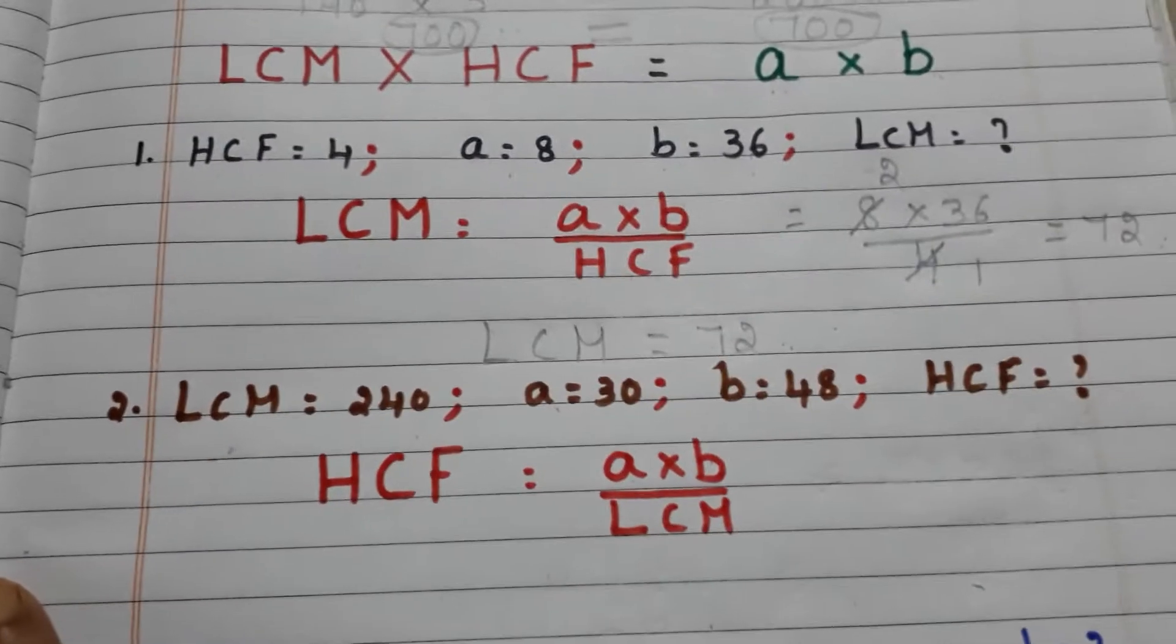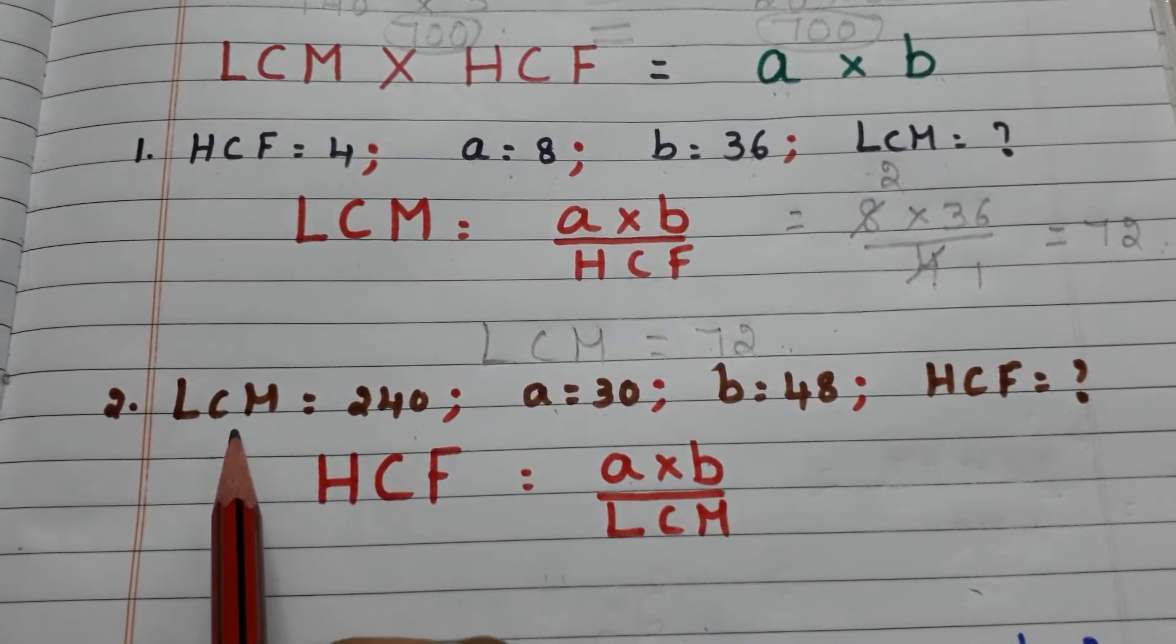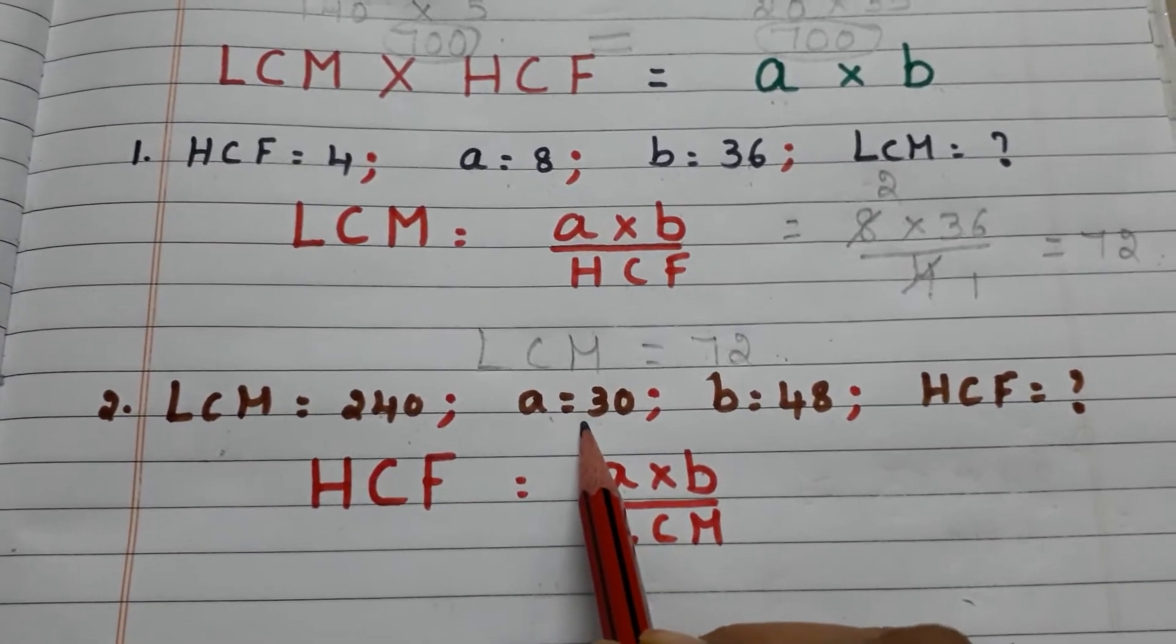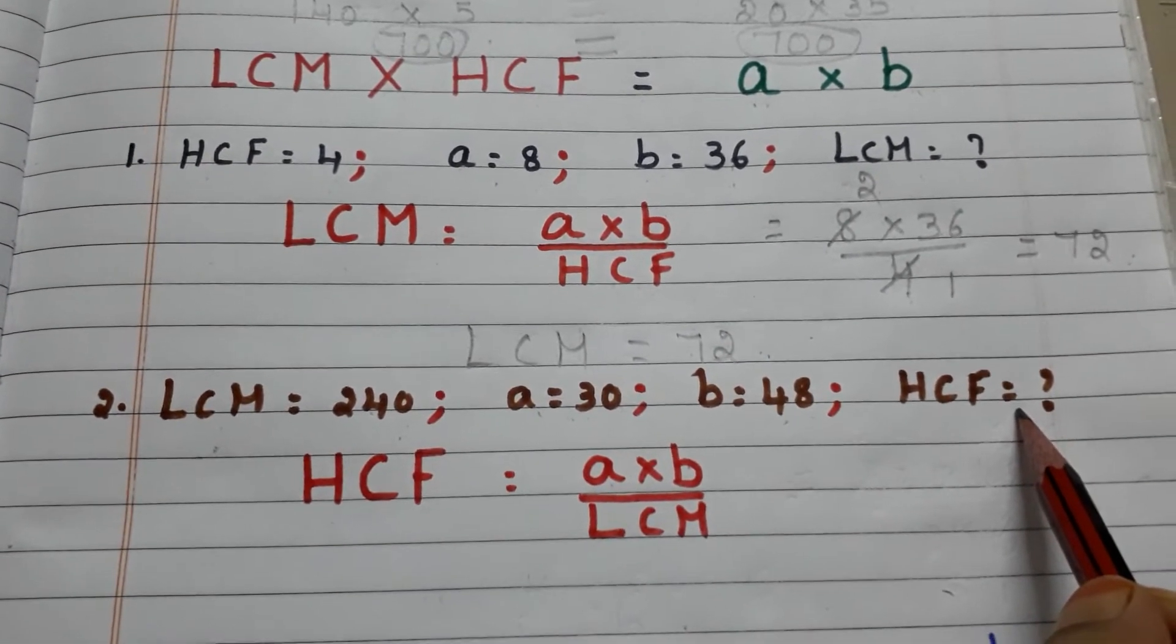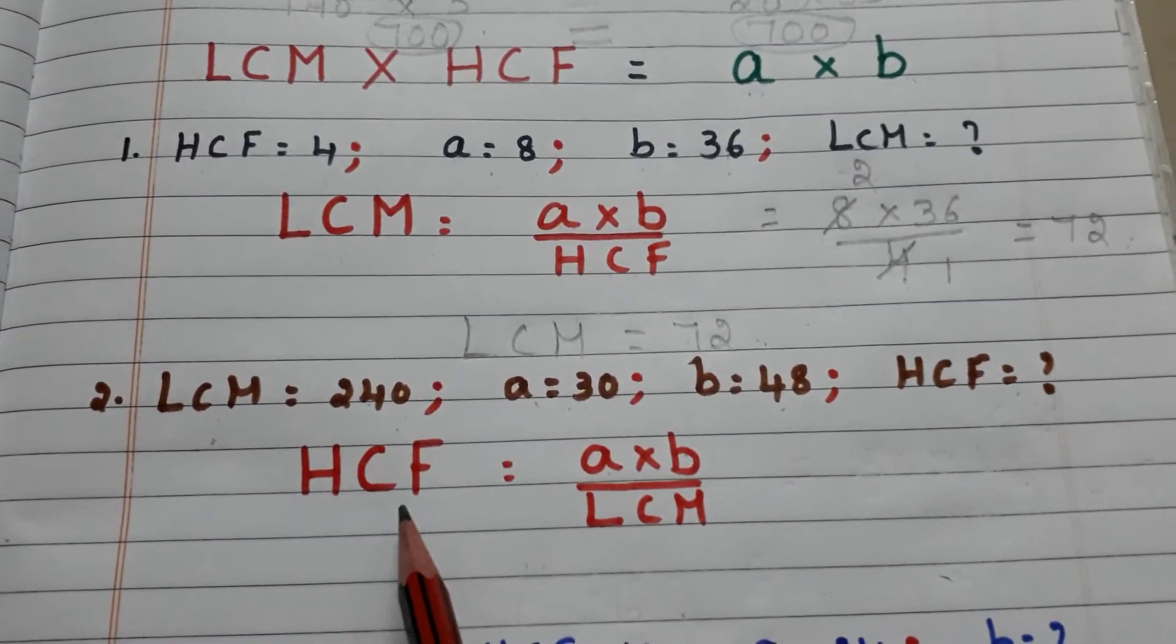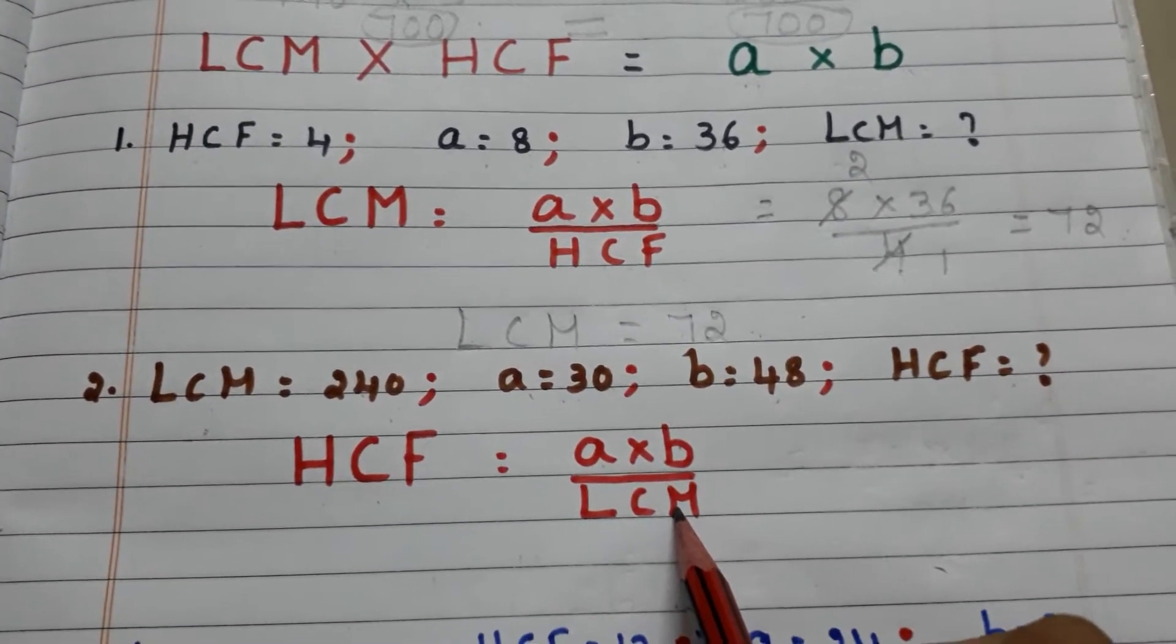Let us go to case 2. Here we have LCM equals 240, first number equals 30, second number equals 48, and we have to find HCF. Now the formula becomes HCF equals a into b by LCM.